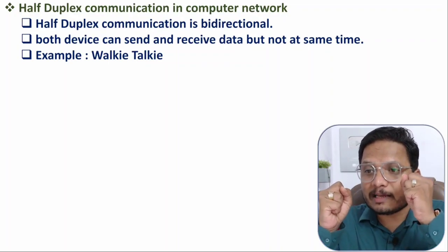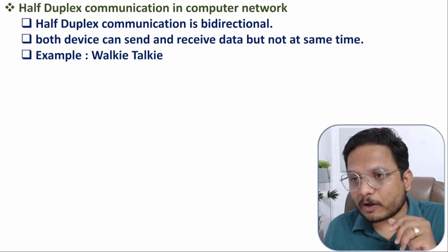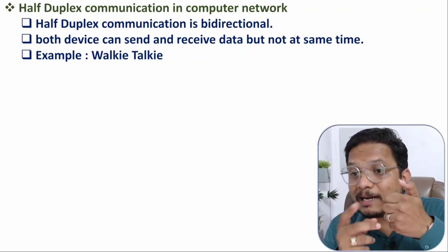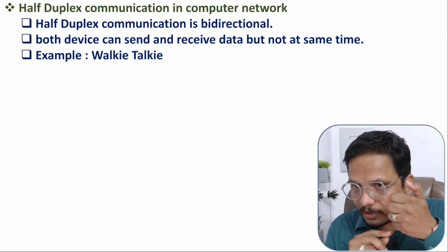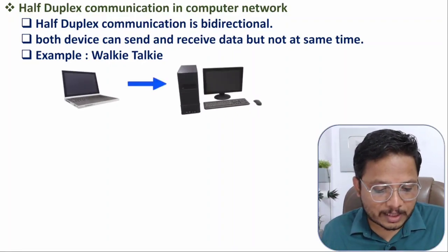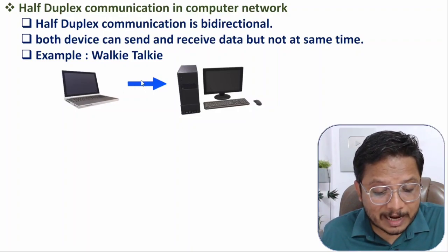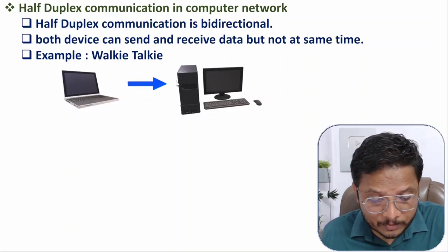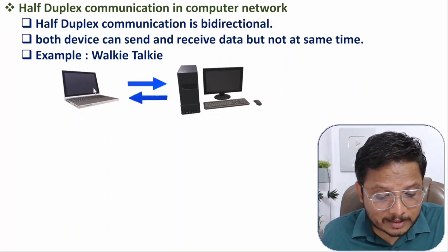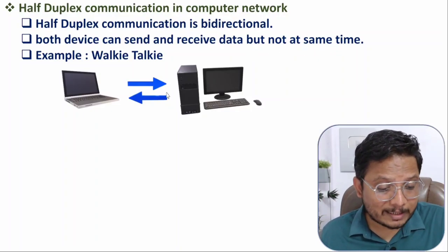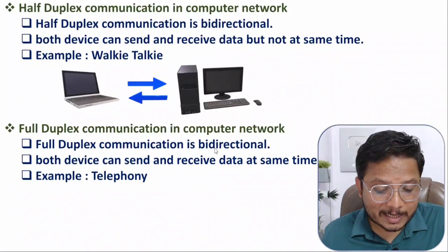Once the transmission is completed, the receiver can then send data to the other device. Like with walkie-talkie — when you press the button you can send a message, but while sending you cannot receive. Both devices can transmit and receive, but not at the same time. This computer can send data to that computer, but only after the current transmission is completed.